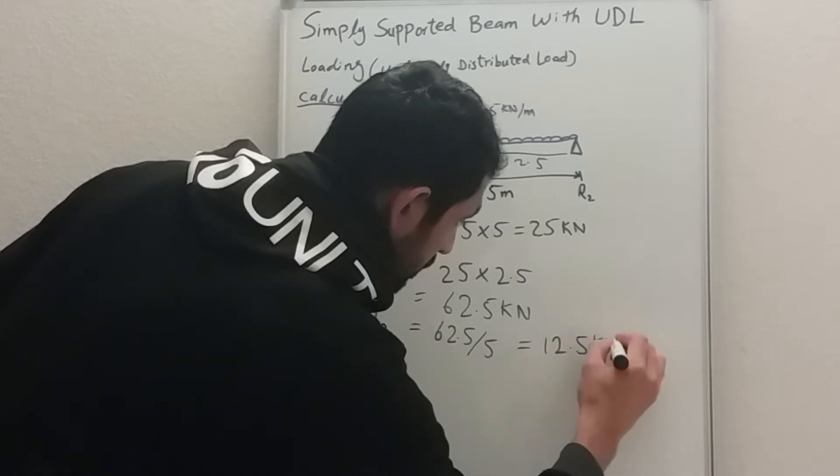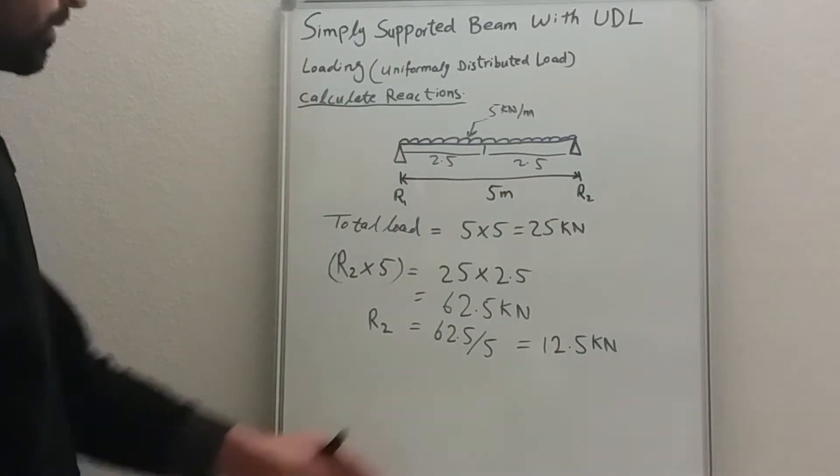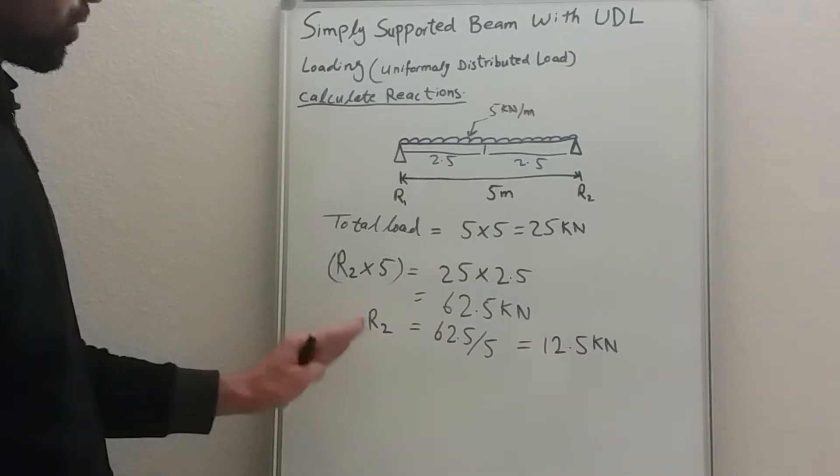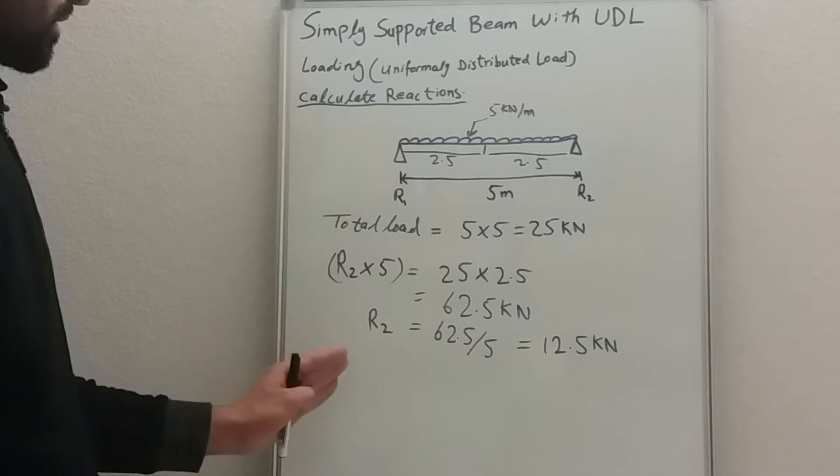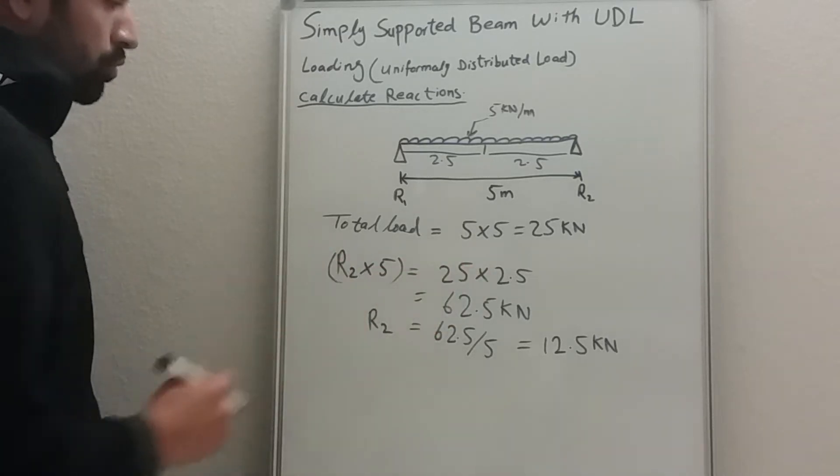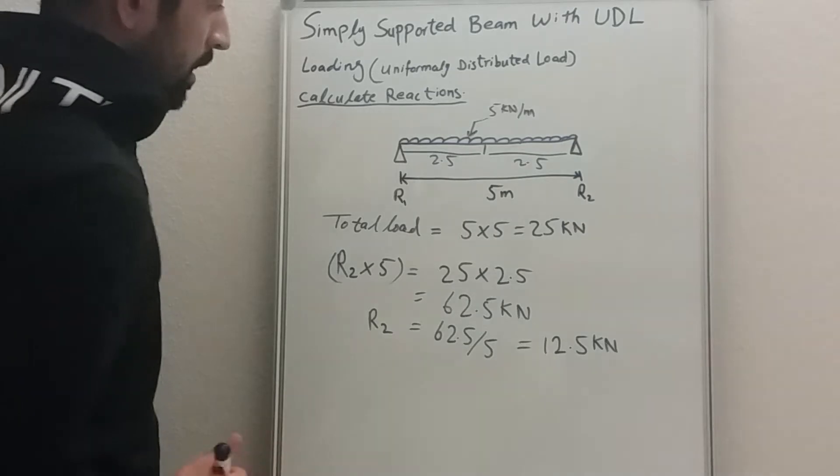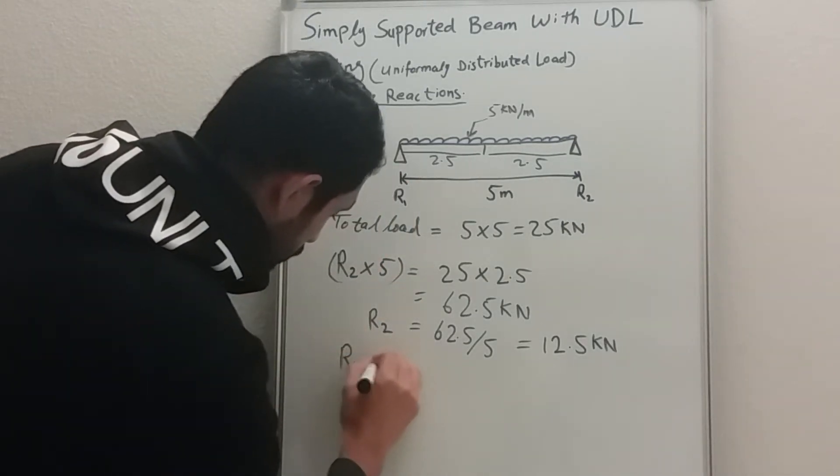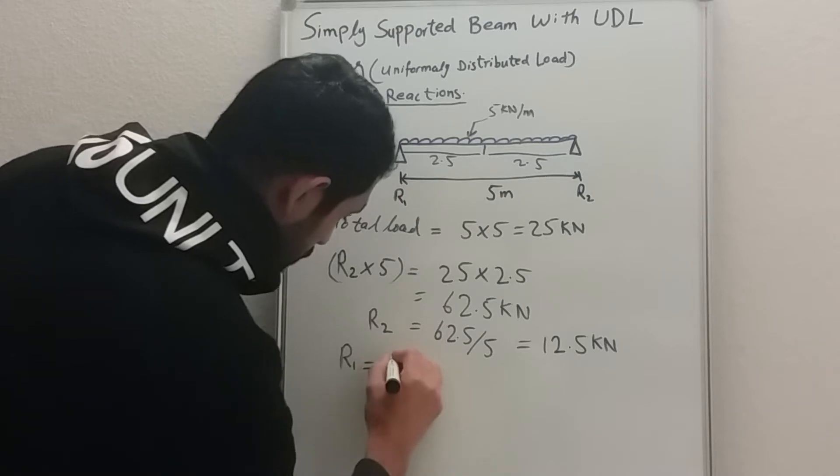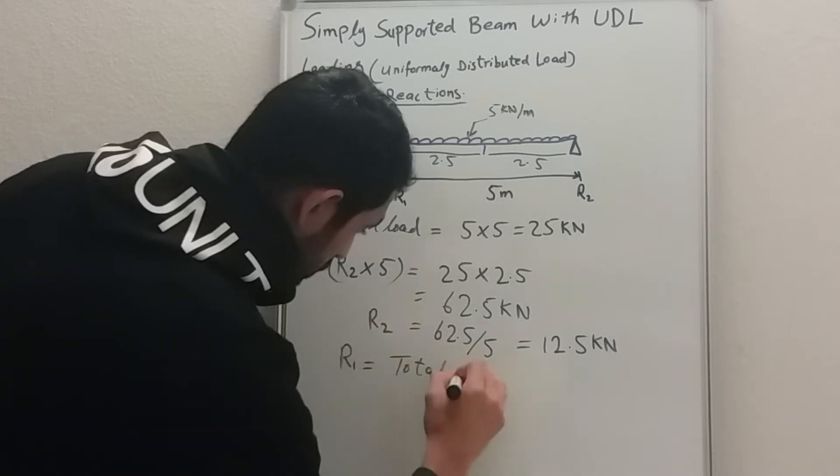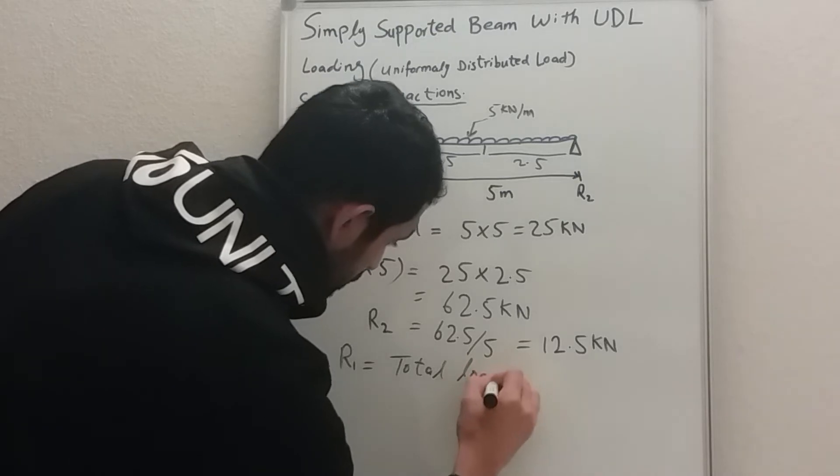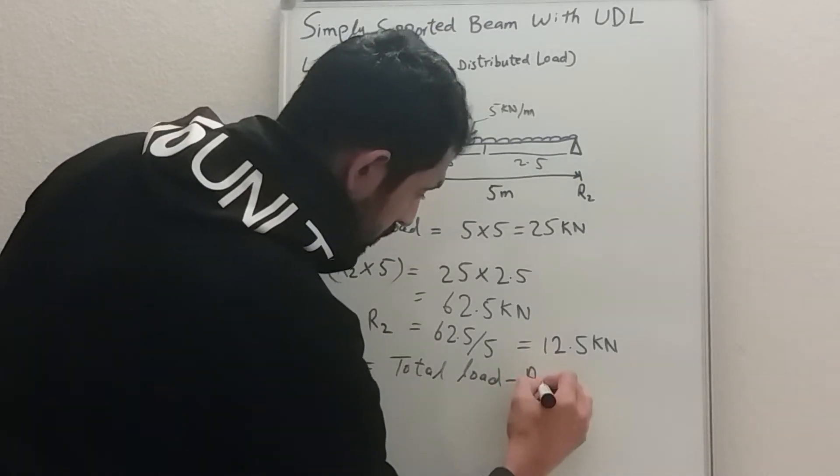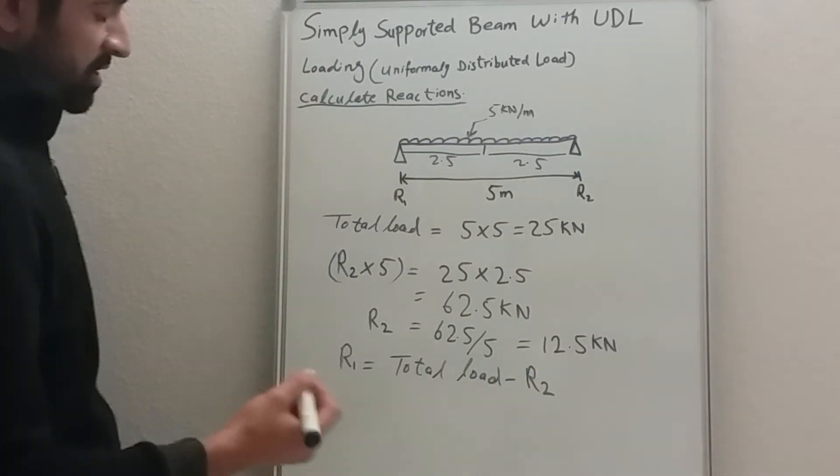So we have 12.5 kilonewtons on R2. R2 is resisting 12.5 kilonewtons. So how to calculate the reaction on R1? The reaction on R1 is going to be the total load minus R2.